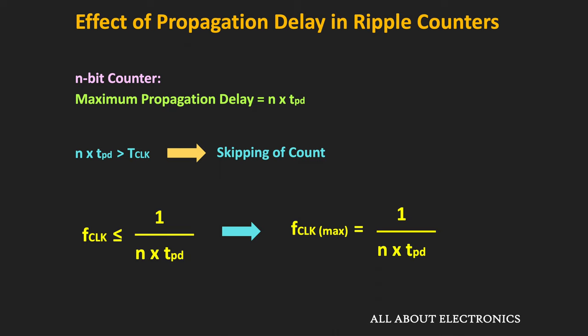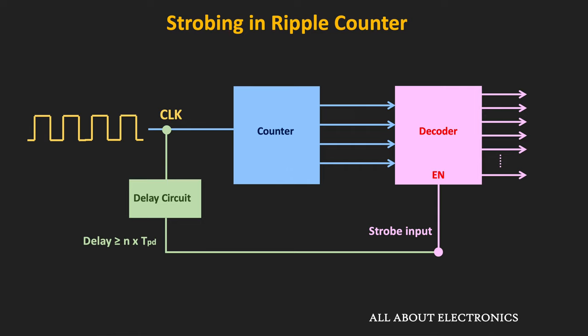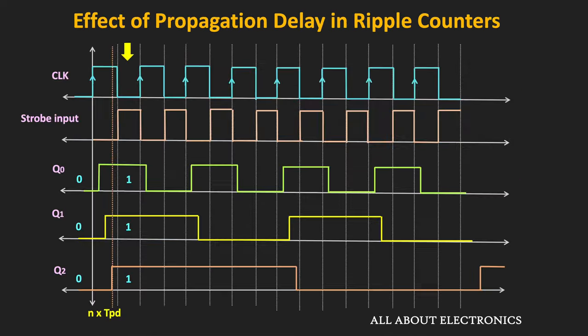To avoid the decoding error, the strobing technique is used. Typically, all decoders have an enable input. We can enable the decoder after the delay of n times TPD, because the transient states occur during the propagation delay of the flip-flops. After this n times TPD duration, we will not observe any transient states. So if the decoder reads the output of the counter after this duration, there won't be any false reading. Typically, such a strobing signal is applied to the decoder, and the strobe input is generated from the clock signal itself — after a finite delay from the clock edge.